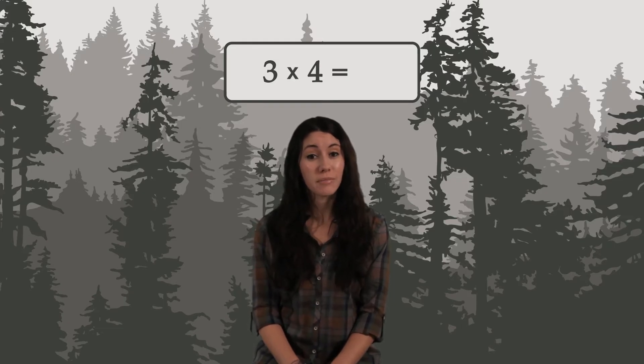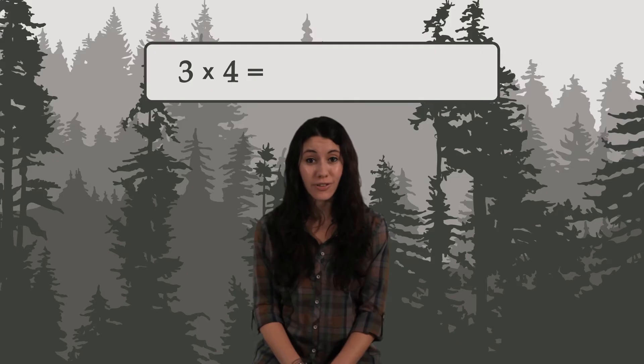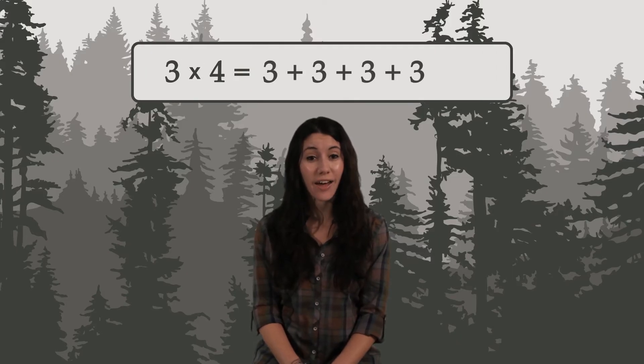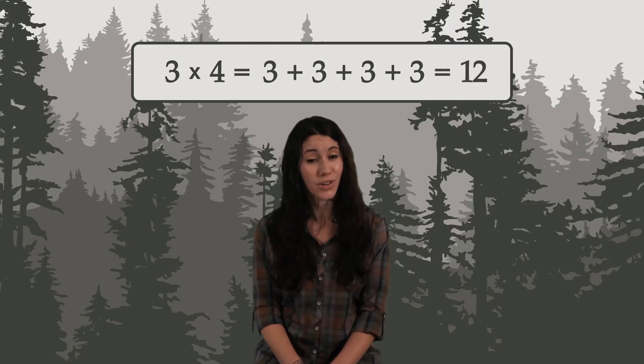3 times 4 means to add 3 to itself 4 times. So we have 3 plus 3 plus 3 plus 3. And if you add them together, you get 12.